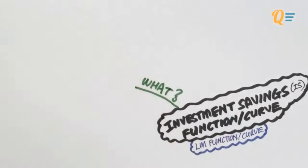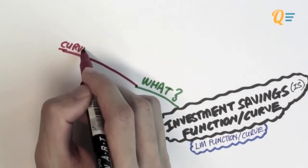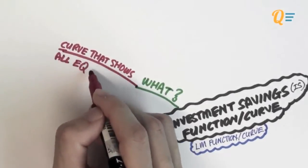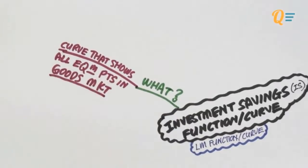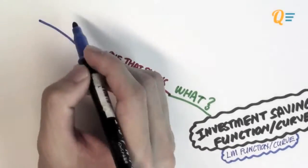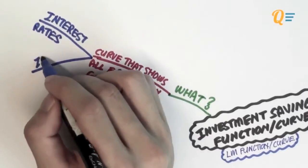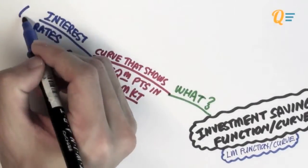What is the IS curve? Basically, the IS curve is a curve that shows all the equilibrium points in the goods market. So when I say the goods market, I'm actually referring to demand for consumption, for investment goods, for government spending, etc. And this curve has got interest rates as the vertical axis and it has got the income level as the horizontal axis.